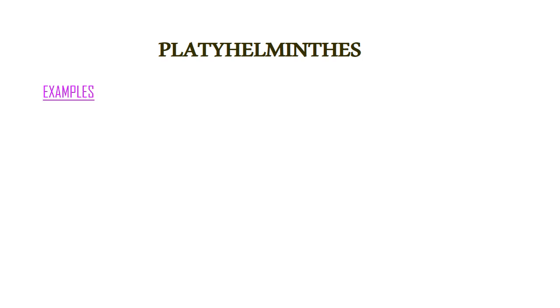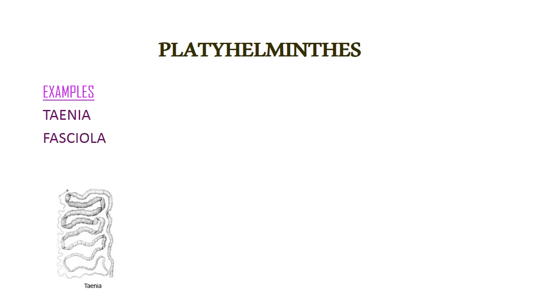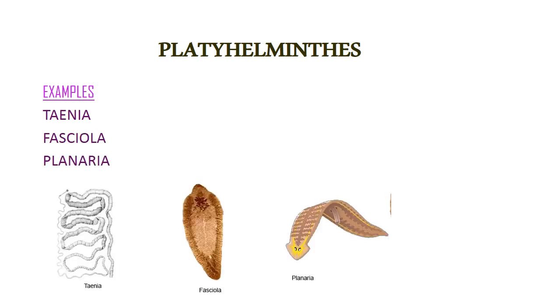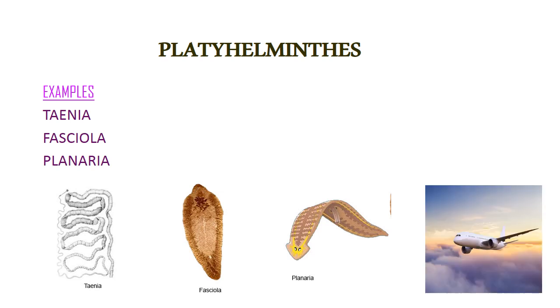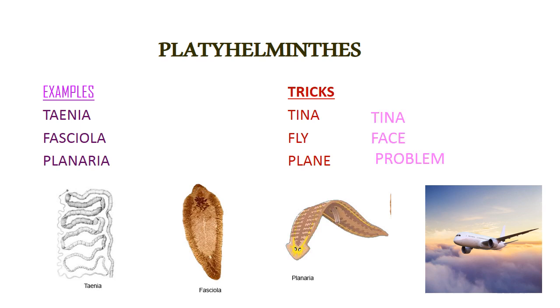The next phylum is Platyhelminthes, also known as Flatworms. The examples are Taenia, Fasciola, and Planaria. Just remember an aeroplane — the trick is 'Tina Fly Plane': from 'Tina' it's Taenia, from 'Fly' it's Fasciola, and from 'Plane' it's Planaria. Another trick is 'Tina face problem': from 'Tina' it's Taenia, from 'Face' it's Fasciola, from 'Problem' it's Planaria.